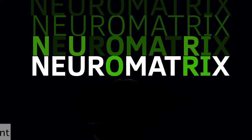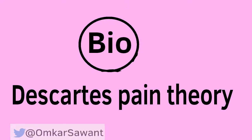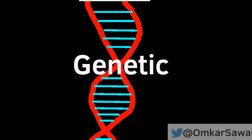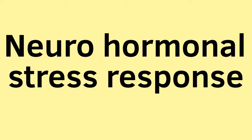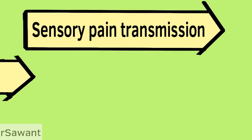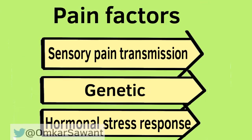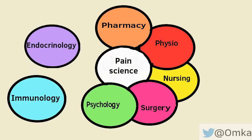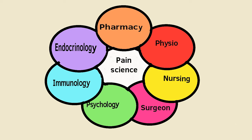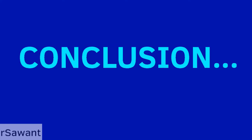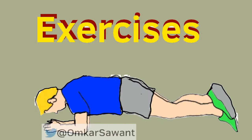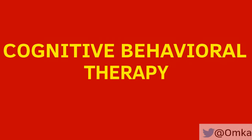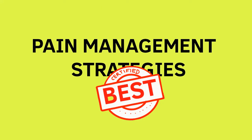This neuromatrix theory is a groundbreaking theory and it explains the multidimensional nature of pain along with the genetic contribution, neurohormonal stress response, and sensory transmission of pain. This has made pain science inclusive, adding endocrinology and immunology to this arena. It also solidifies the rationale for exercise rehabilitation, pain science education, and cognitive behavior therapy for the best management of pain.